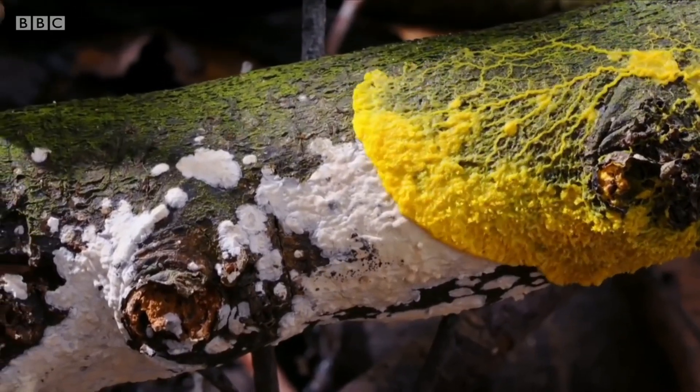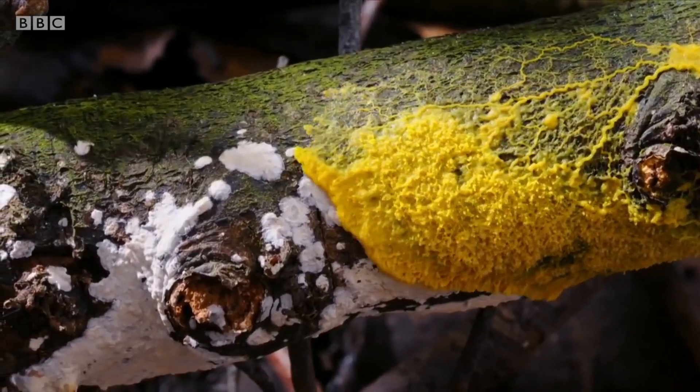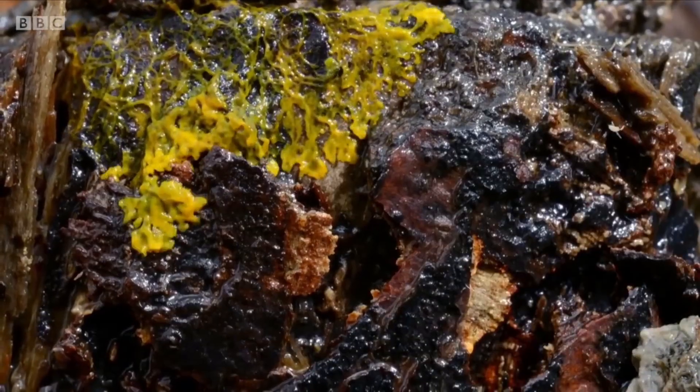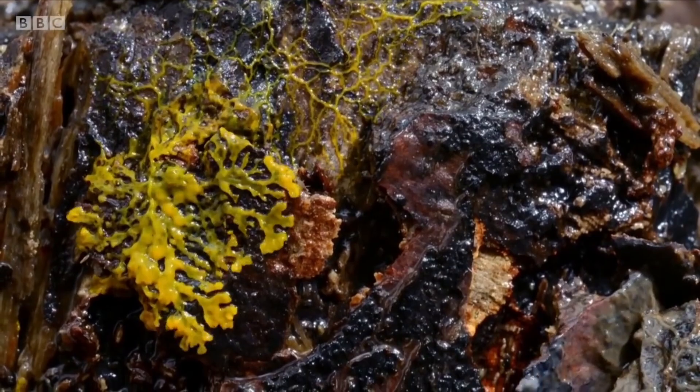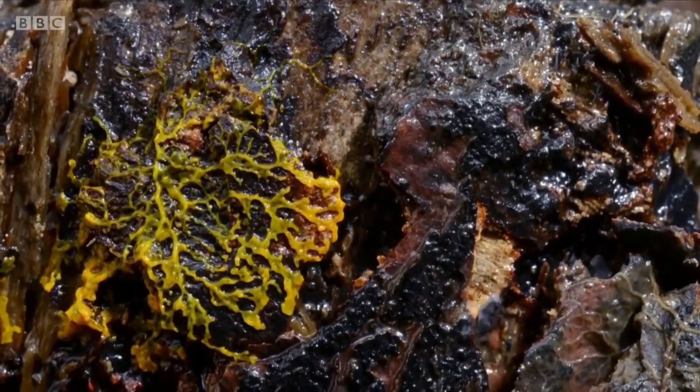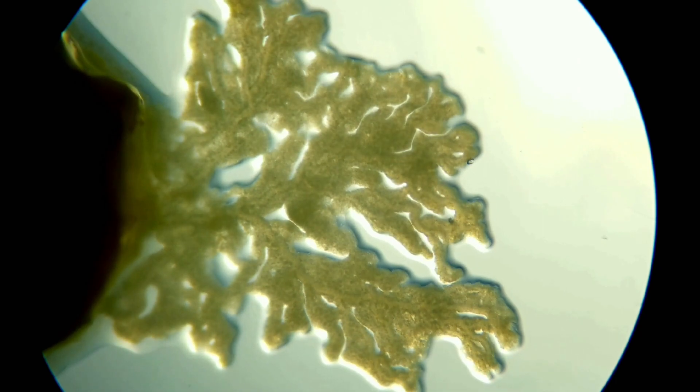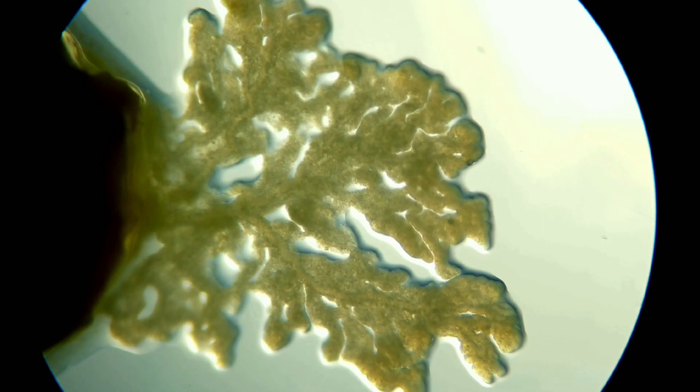Reaching upwards of a meter or more in area, these massive amoeboids prowl the forest floor, ravenously consuming microbes, fungi, and inorganic materials. Despite being only a single cell, slime mold plasmodia can contain thousands to millions of nuclei.